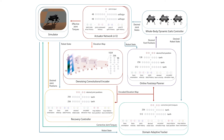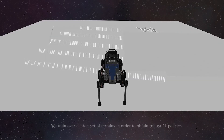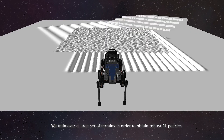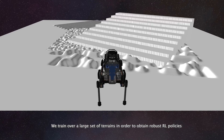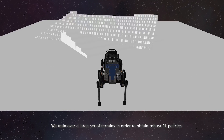Since we use a physics simulator to train these policies, it becomes necessary to accurately model the dynamics of the system, making it easier to perform a sim-to-real transfer. In this regard, we introduce an actuator network as an approximation of the complex actuation dynamics of the physical system, to generate an effective joint torque for joint position, velocity and feed forward torque commands. Moreover, in order to obtain robust RL policies, we perform training over a large set of terrains.